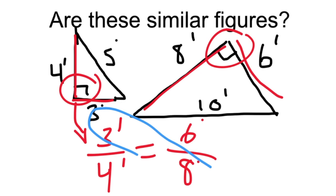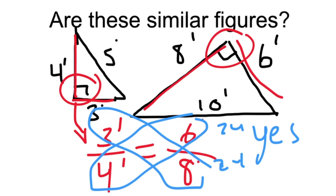Hopefully you can tell that three out of four is the same as six to eight. If you can't, you can also cross multiply and you see that the cross products are twenty-four. Yes, these are similar figures.